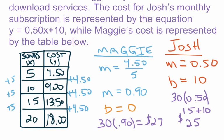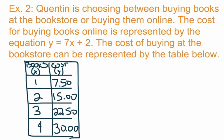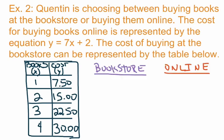Let's take a look at one more example. Quentin is choosing between buying books at the bookstore or buying them online. The cost for buying books online is represented by the equation y equals 7x plus 2, while the cost at the bookstore is represented by a table. Start with the equation since that's easier to identify slope and y-intercept from.